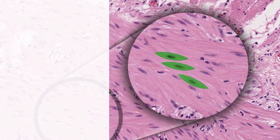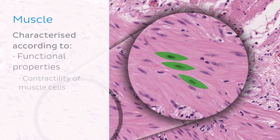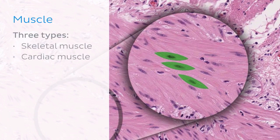Not all muscle is created equally though, and in fact there are a few easily distinguishable subtypes. Muscle tissue is characterized according to its functional properties and the contractility of muscle cells into one of three major types: skeletal muscle, cardiac muscle, and smooth muscle.